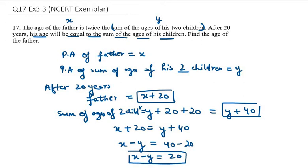Now in the first equation, it is given the age of the father is twice the sum of the ages of his two children. So it will be x equals 2y. This is my equation number 1 and this is my equation number 2.